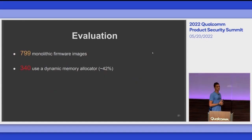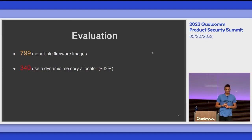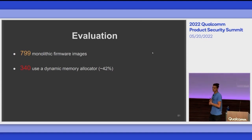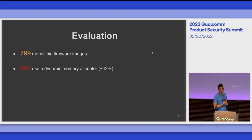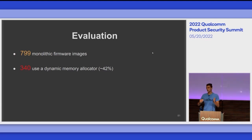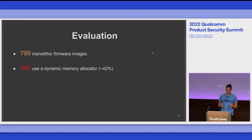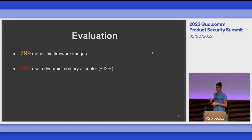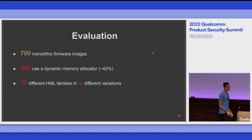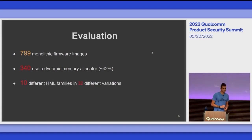We found with Hipster that 340 of the 799 firmware images use a dynamic memory allocator — about 42 percent. This number is interesting considering the significant pushback from the embedded developer community against using dynamic allocators in firmware images. Nearly half of them were actually using one, which is strongly discouraged. We found around 10 different HML families in 32 different variations.